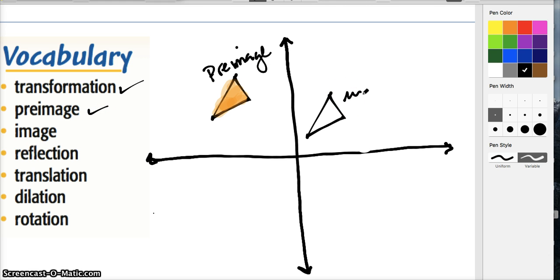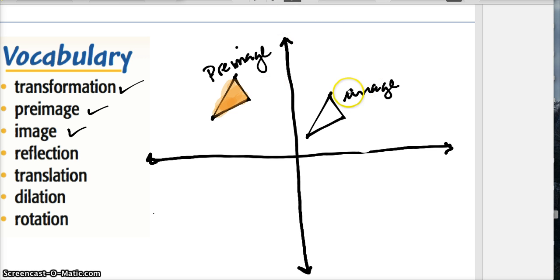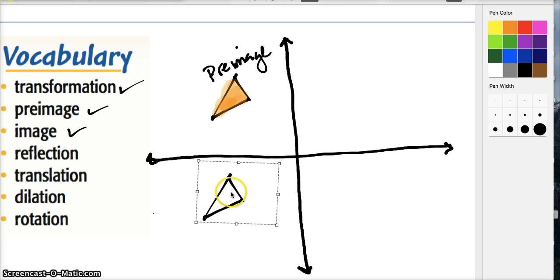The next one is the image, the thing that we ended up with after we did a transformation. Reflection is a specific type of transformation. I want to go back to translation. Translation is taking that original picture and literally translating it anywhere else, moving from one place to another. Notice that as I slide it around, this shape doesn't change. So that's a translation.